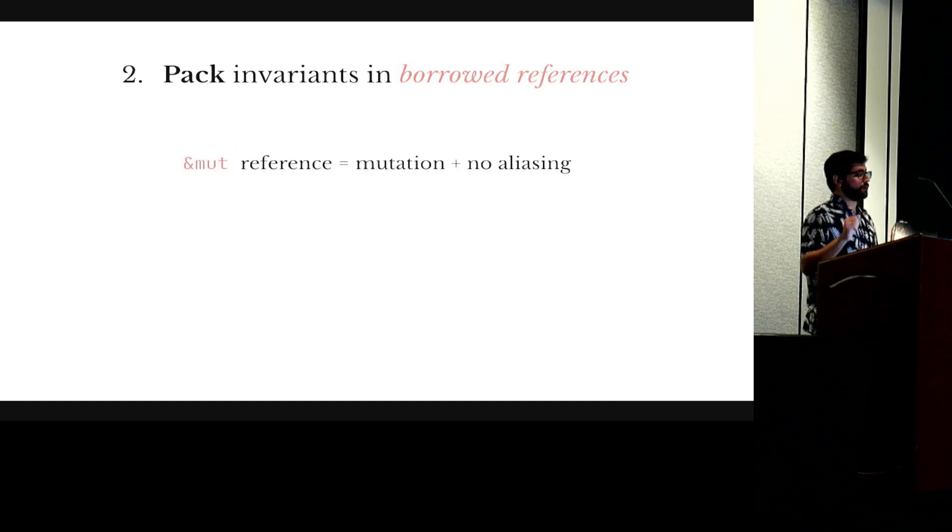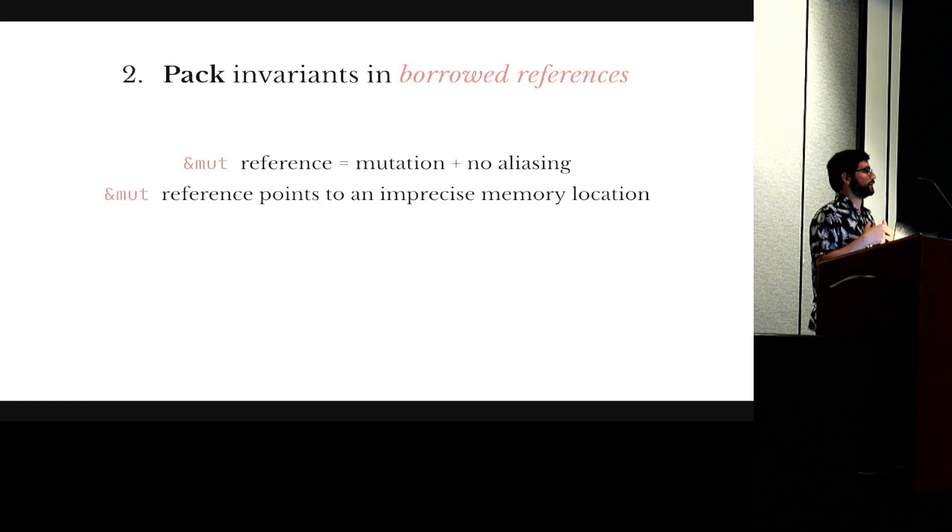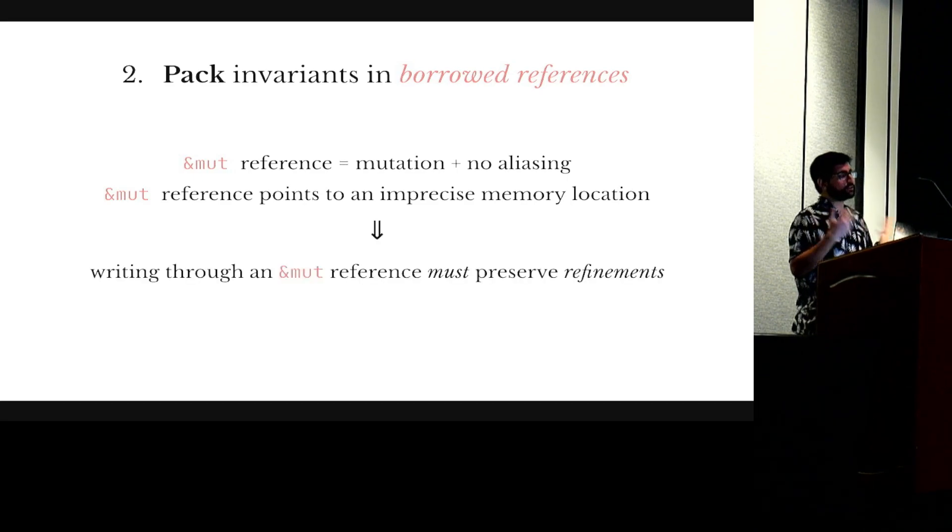Mutable references are a bit more subtle. Typically they're presented as allowing mutation but no aliasing. So like exclusive ownership they guarantee exclusive access, but we don't know exactly which location they may be pointing to. It may be a location that we don't know exactly.